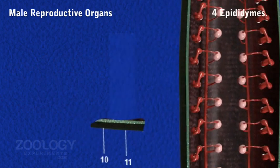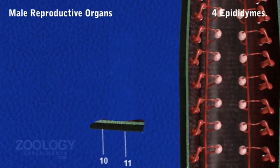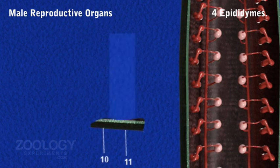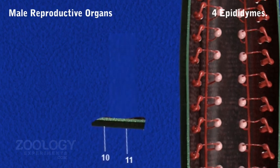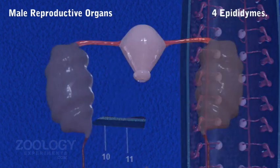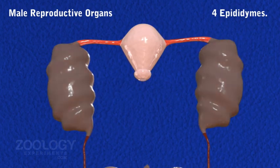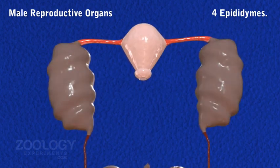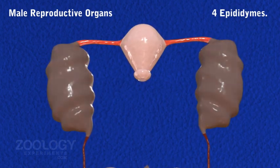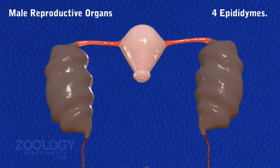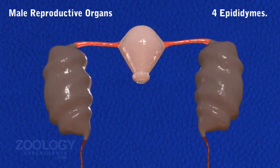Epididymis: Both the vasa deferentia in the 10th segment swell to form a highly convoluted mass called the epididymis. The two epididymis serve to store spermatozoa brought by the vasa deferentia.